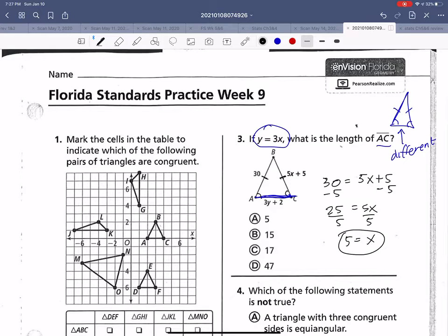I can plug x back in here, so y equals 3 times 5, which is 15. So now we know what y is. They said solve for AC. AC is 3y plus 2, so 3 times 15 plus 2. That'd be 45 plus another 2, 47. There's our answer.